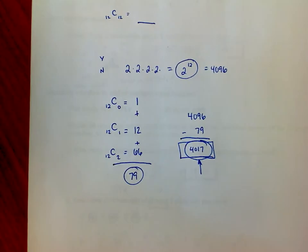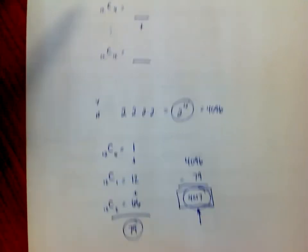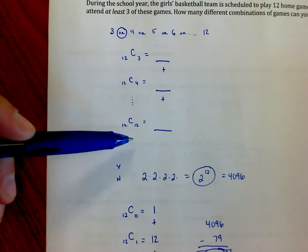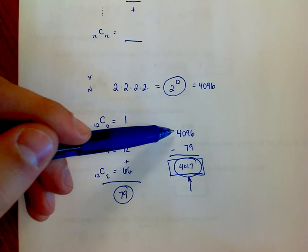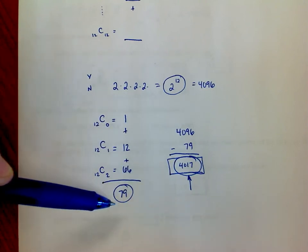In other words, it's kind of like a work backwards approach. Instead of finding the things that do meet the requirements and taking this long problem, I could simply find the number of total possibilities that I have and subtract away the ones that don't meet the requirement.